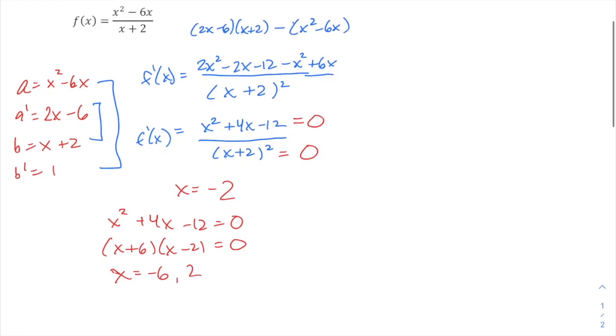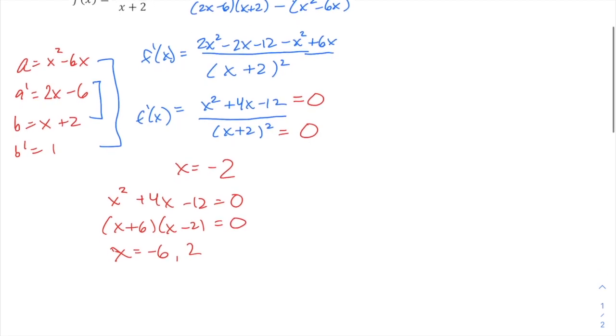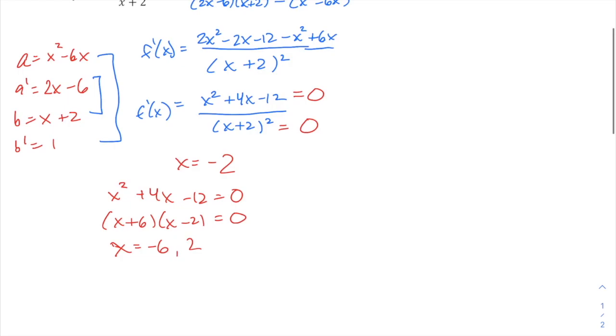And the function is defined at those two values. So those two could potentially be a relative max or relative min, or neither. But that's really what the next step is all about, is how do we test if they are relative maxes, mins, neither, and determining those intervals of increasing and decreasing for the function.